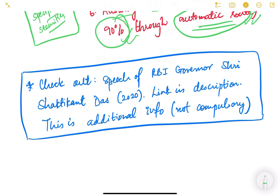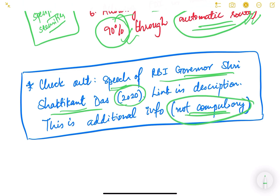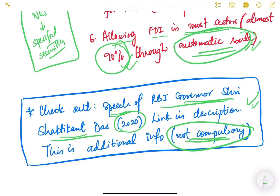In the description section, there is a link to a 2020 speech by RBI Governor Shri Shaktikanta Das, where he explains the development of capital account convertibility in India over the years. It takes about 10–15 minutes to read and is optional but recommended. This concludes our study of currency convertibility — key takeaways are the difference between current and capital account convertibility, why full capital account convertibility is not yet suitable for India, and the steps being taken toward that goal.